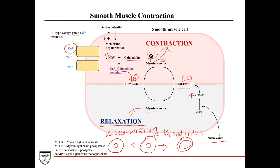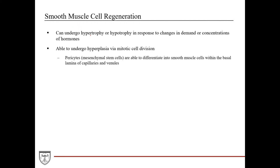Lastly, smooth muscle cell regeneration. Smooth muscle cells can undergo hypertrophy or hypotrophy in response to changes in demand or hormone concentrations — hypertrophy when overstimulated, hypotrophy when understimulated. They are also able to undergo hyperplasia via mitotic cell division, which is unique among the three muscle types, since skeletal and cardiac muscle cannot undergo mitosis. Additionally, pericytes — mesenchymal stem cells located within the basal lamina of capillaries and venules — can differentiate into smooth muscle cells, providing another source of new smooth muscle cell generation.